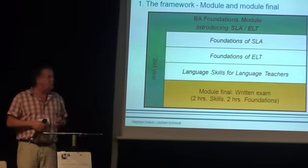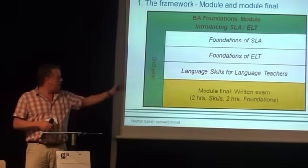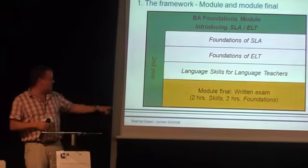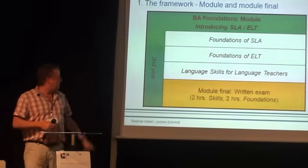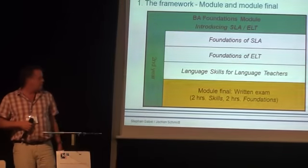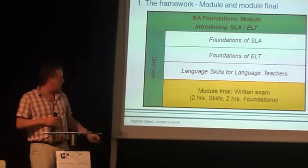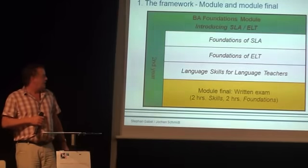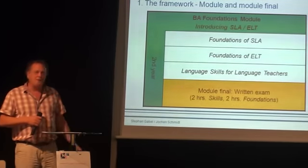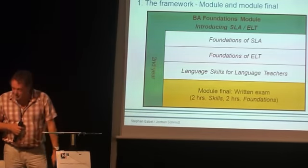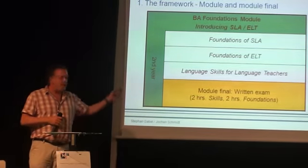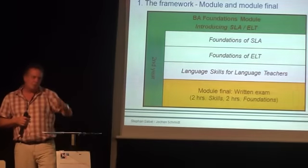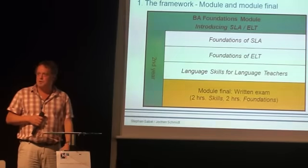The module ends with a final written exam testing both their knowledge concerning applied linguistics and their proficiency levels in English — we'll be referring to that as the module final. There are some 270 to 300 students taking the module per year, so class sizes in the lecture groups are enormous, whereas in the language skills classes we work in comparatively small groups of between 25 to 50 students on average.